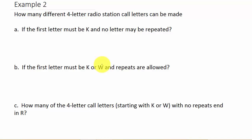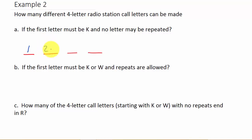Part A: the first letter must be K and no letter may be repeated. Let's draw the four spaces for the call letters. For the first letter, I have one choice because it says the first letter must be a K, and there's only one K in the alphabet. For the second letter, there are 26 letters in the alphabet, so I have 25 choices because no letter may be repeated — I've already used one letter.